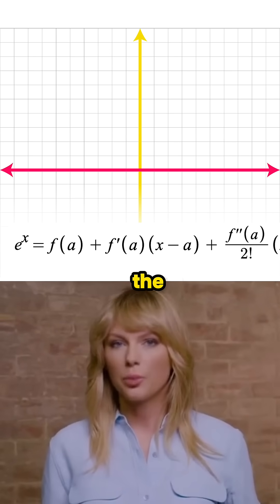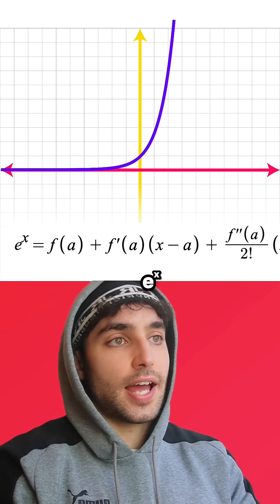Sure, let's do it for e to the x. The purple curve up there is how it's meant to look. Okay, so how do we break e to the x down?